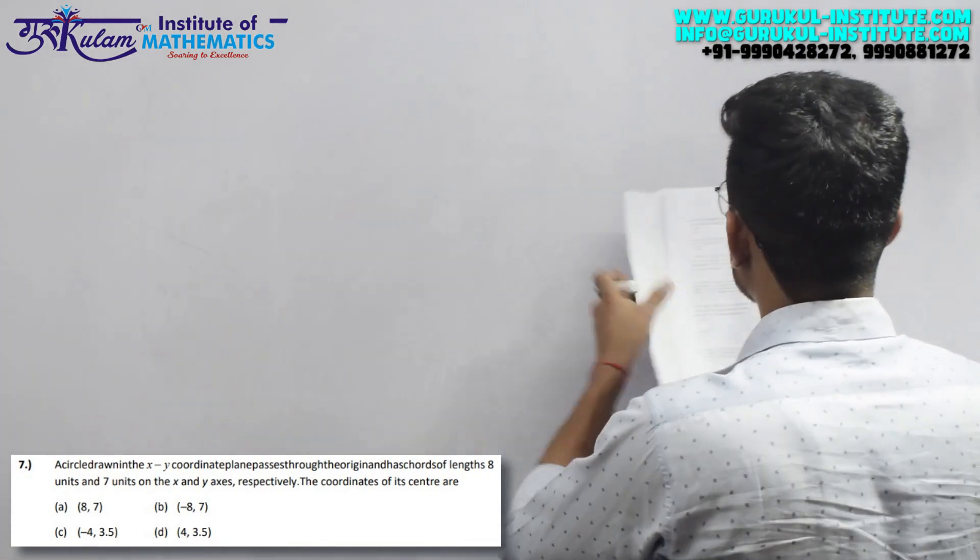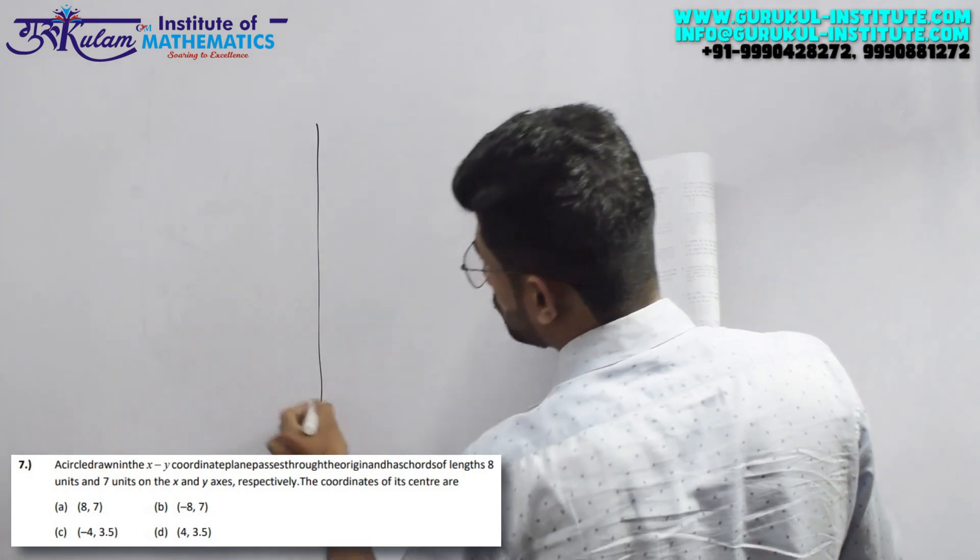A circle drawn in the XY coordinate plane passes through the origin and has chords of length 8 units and 7 units on the X and Y axis respectively. The coordinates of its center are - now basically, what is the XY plane which is a circle which passes through the origin?